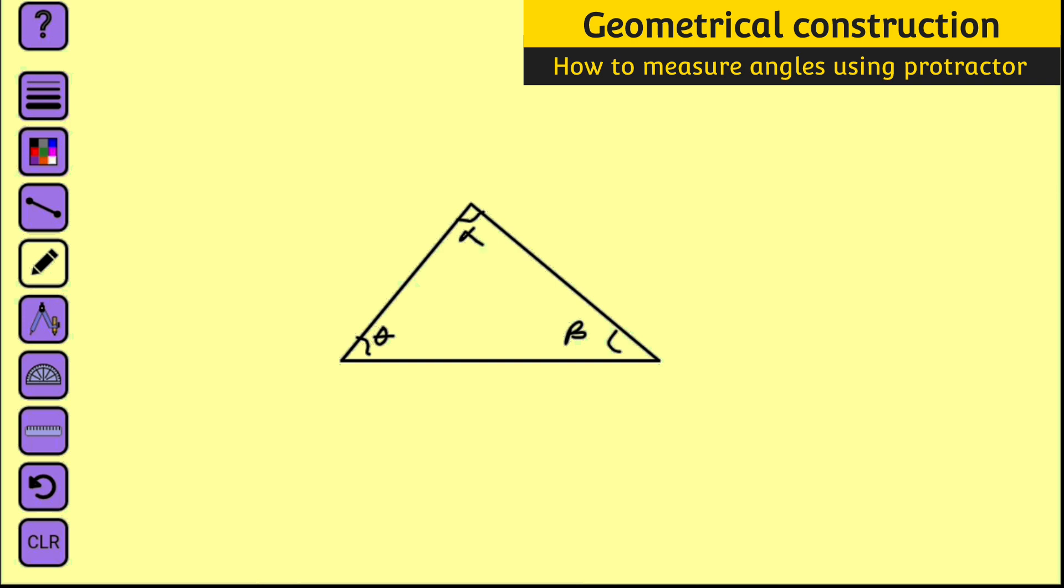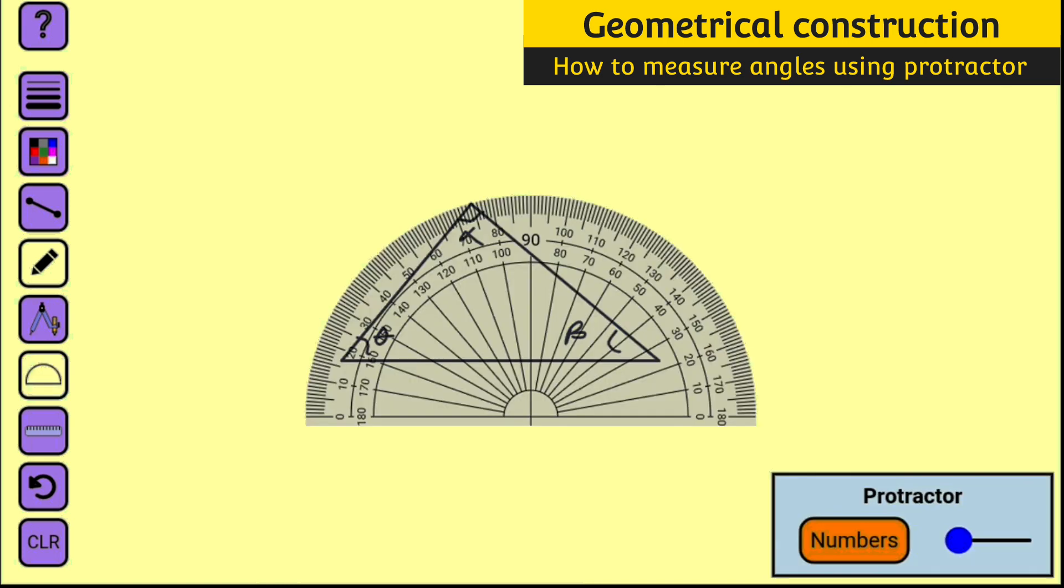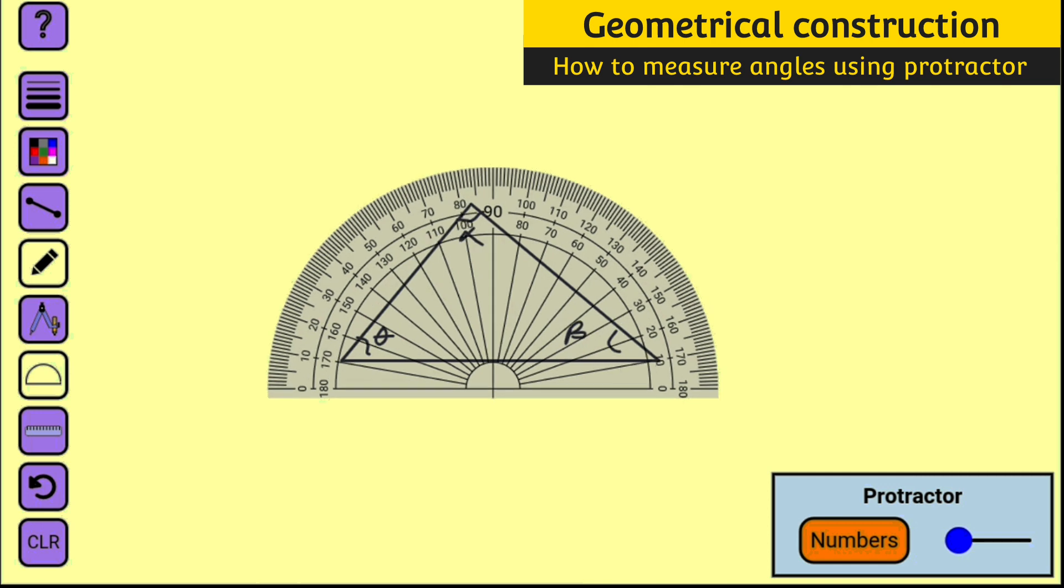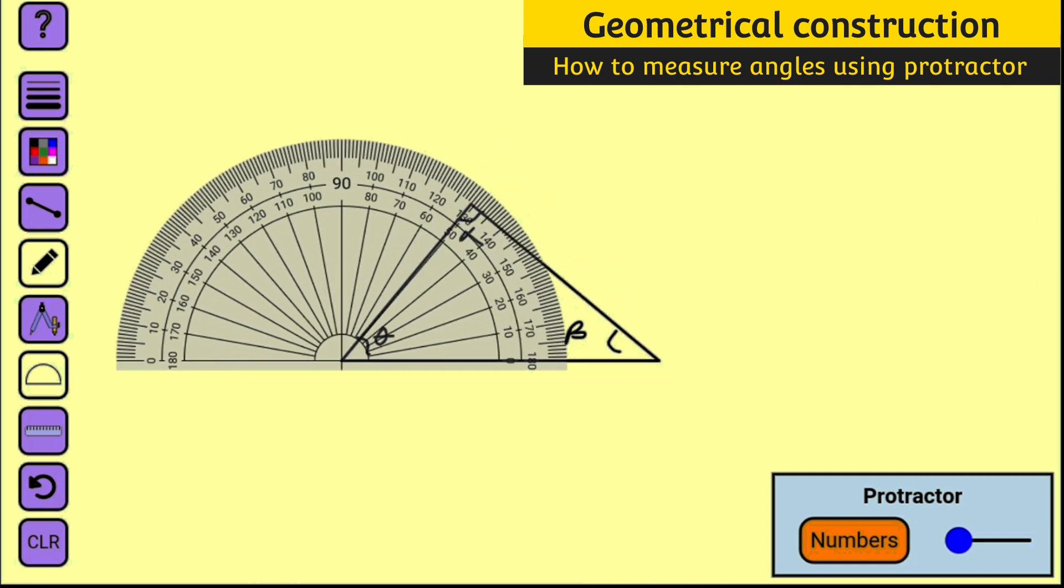Okay, now let me measure angle theta first. We can measure any one of them, let me start at random. This is my protractor, let me place it here. Now we want to measure this angle theta. This is going to be 10, 20, 30, 40, 50, 51. So this angle theta is 51.